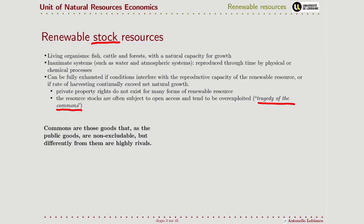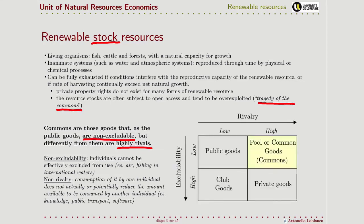Commons are goods that, like public goods, are not excludable — we cannot exclude people from benefiting from them. But unlike public goods, they are rivalrous. So if I am benefiting from this good — if I am fishing a fish — this fish is no longer available for someone else. The problem of many renewable stock resources is that they constitute commons and hence exhibit this problem of the tragedy of the commons.